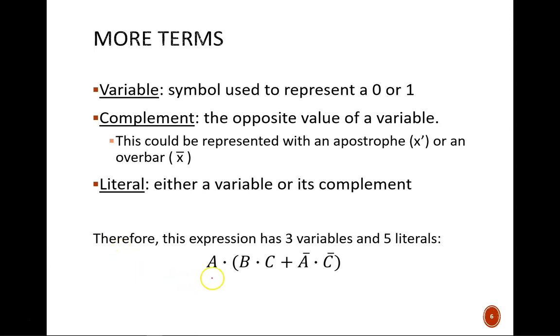To distinguish between these terms, examine this expression. In it, there are three distinct variables: A, B, and C. But there are five distinct literals. A bar counts as a separate literal from A, but it is the same variable.